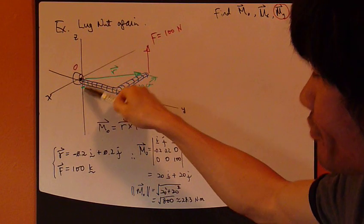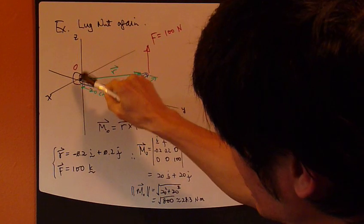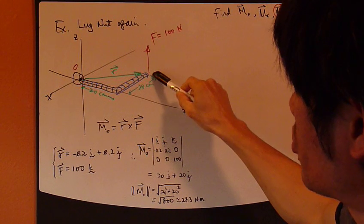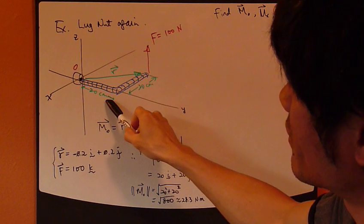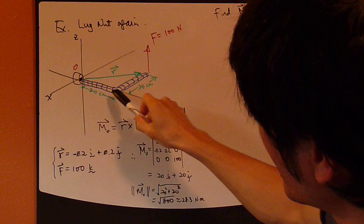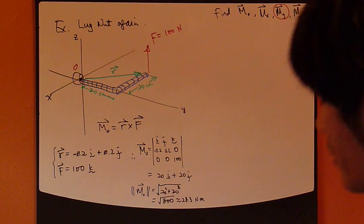Okay, so you have this lug nut, you have this wrench that's attached to the lug nut, and then you apply this force, vertical force at this point. Okay, let's say this wrench is 20 centimeters in each direction. And X, Y, and Z are defined this way.